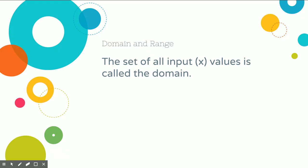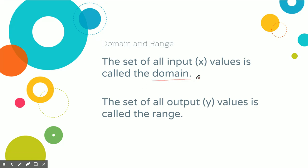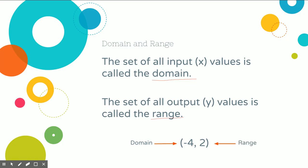The set of all input values, which is x, is called the domain. So x values are the same as the domain. Another word for our y values is the range. So x's are our domain and y's are our range. For example, in the ordered pair negative 4 and 2, the negative 4 is our domain because it's the x value, and the 2 is the range because it is the y value.